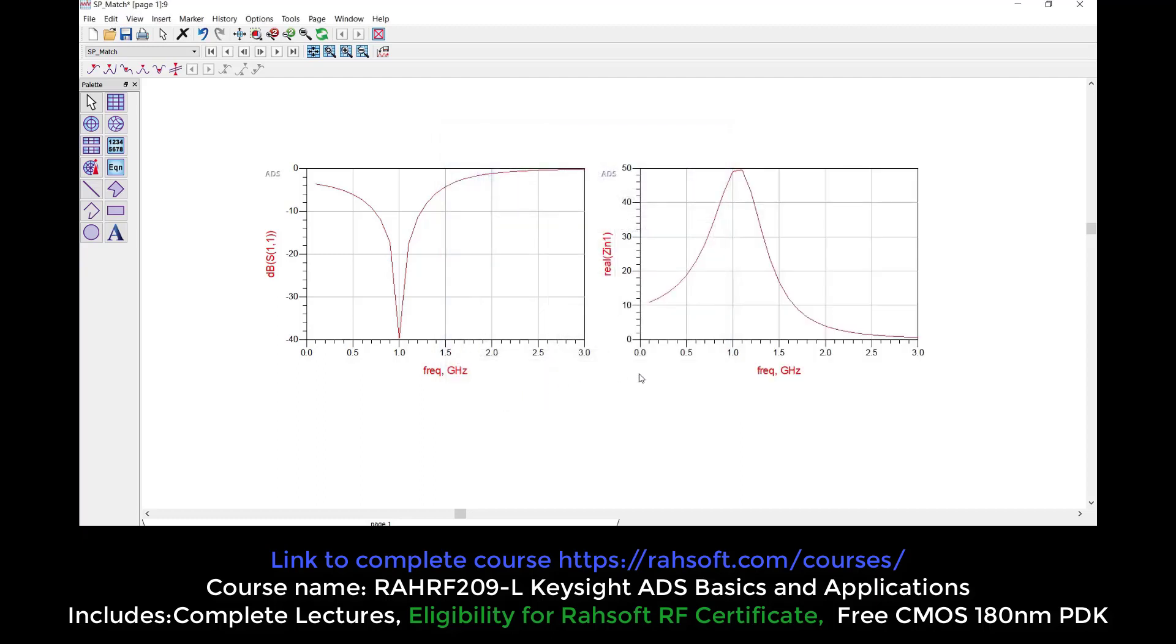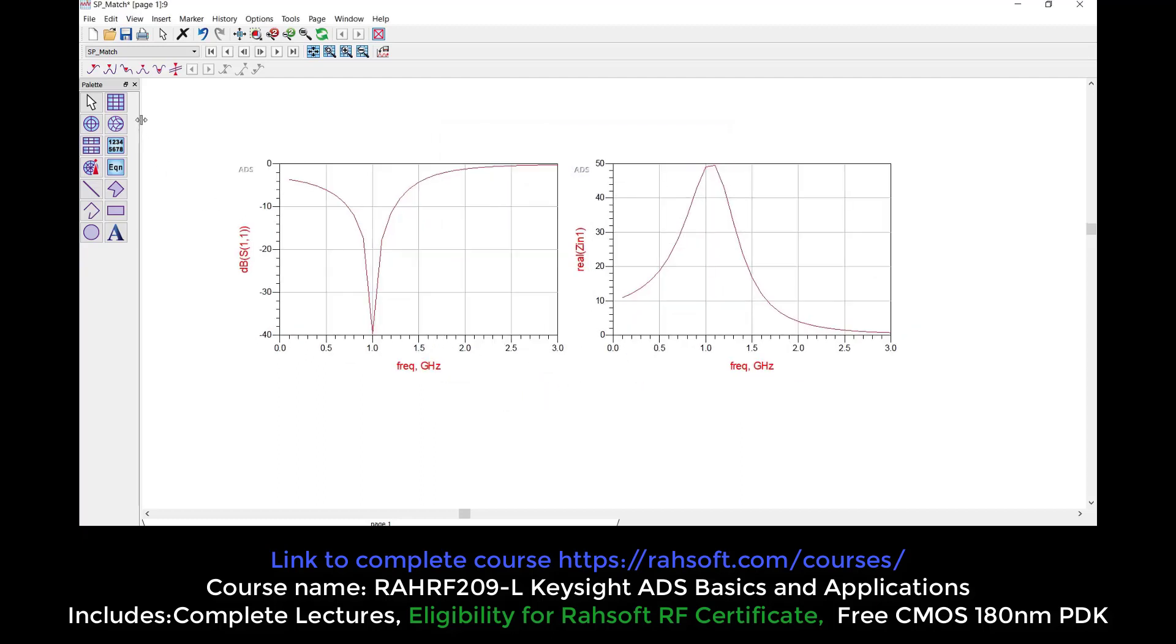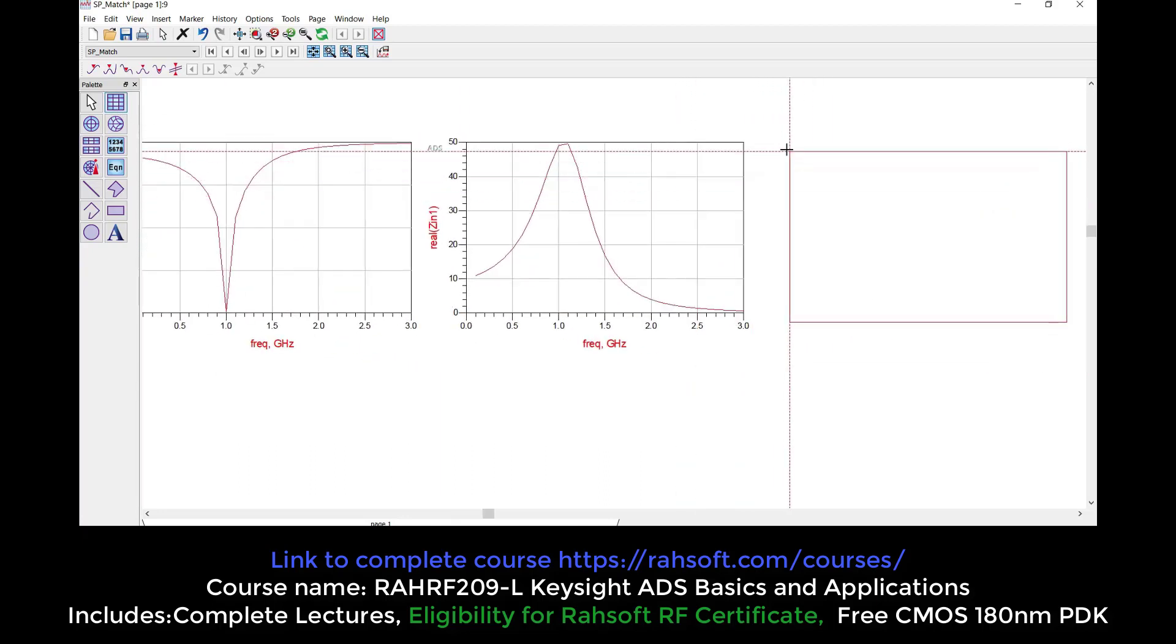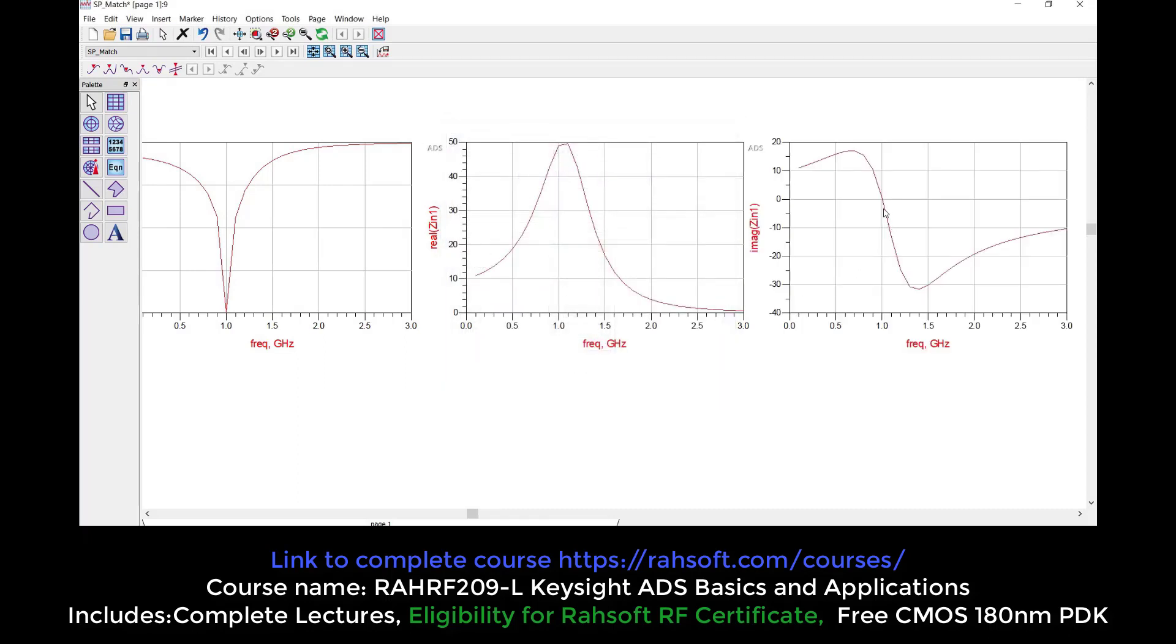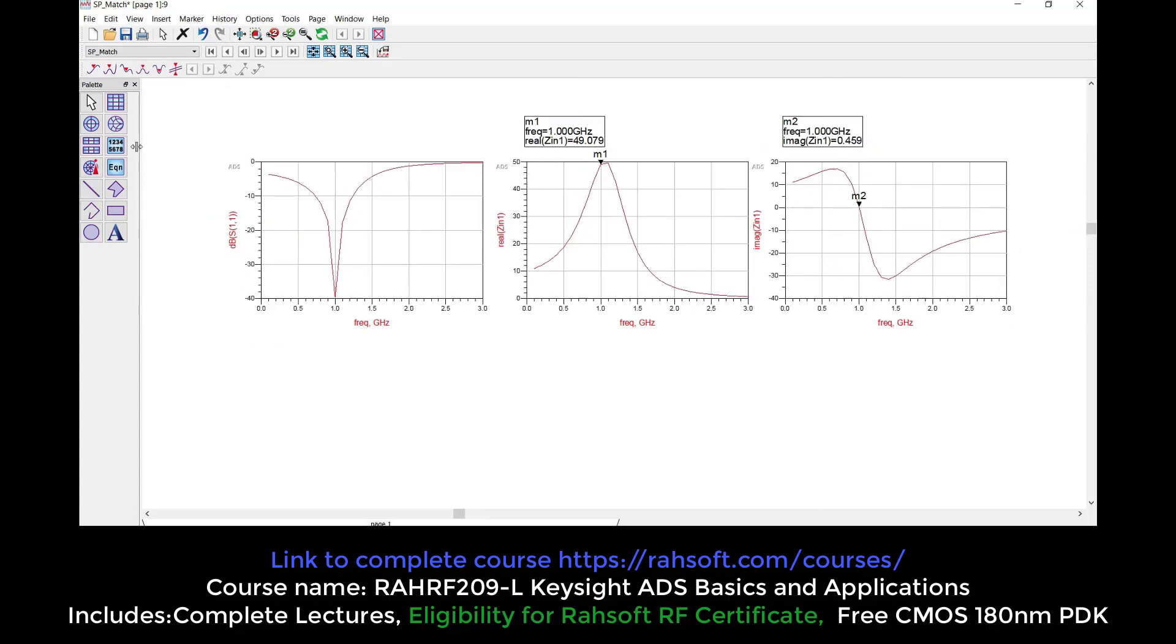I can also see the input impedance here. Let's see the real part - as you see, it's very close to 50. What about the imaginary part for my input impedance? Z_in imaginary part should be 0, and as you see at frequency of 1, the imaginary part is exactly 0. I'm going to put some markers here to see it better. At 1 gigahertz, it's 49 and the imaginary part is very close to 0.